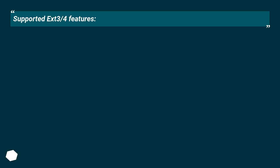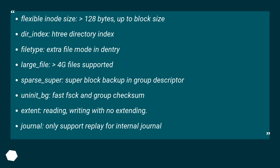Supported ext3/4 Features: Flexible inode size greater than 128 bytes up to block size. dir_index — tree directory index. File type — extra file mode in dentry. large_file — files greater than 4 GB supported. sparse_super — super block backup in group descriptor. uninit_bg — fast fsck in group checksum.